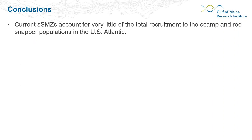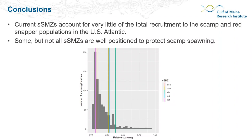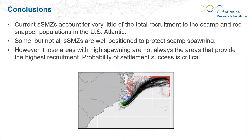In conclusion, the current SSMZs account for very little of the total recruitment to scamp and red snapper populations in the U.S. South Atlantic. Some but not all SSMZs are well positioned to protect scamp spawning — three are in the top 15% of Atlantic spawning locations — however high spawning areas are not always high recruitment areas. This is exemplified by South Cape Lookout, which has high relative spawning for scamp but most simulated larvae are swept offshore and don't encounter appropriate settlement habitat.